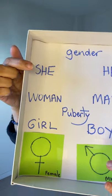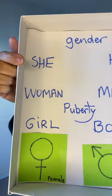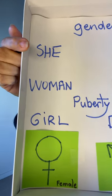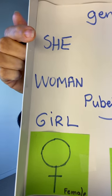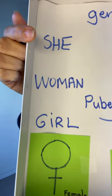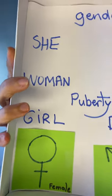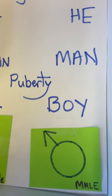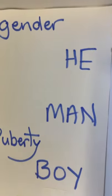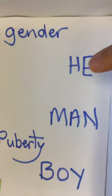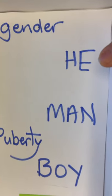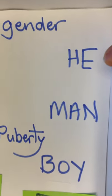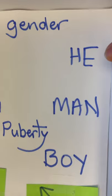So, a female is also a she — a she. And a male is also a he. He is male.